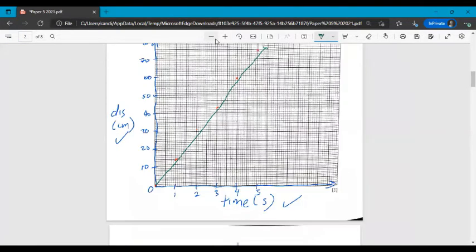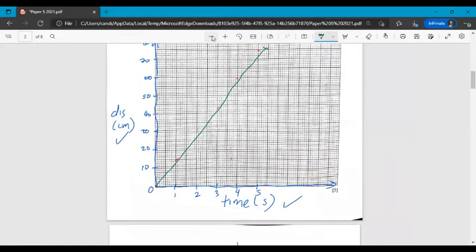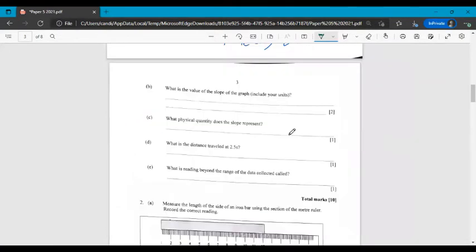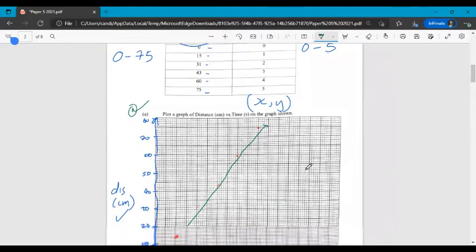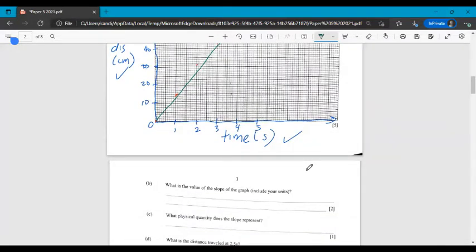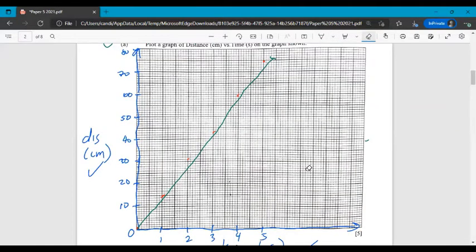But the main point is that you're going to get a linear graph. You're going to get a straight line graph. All right. Then the next thing you're asked to do. So this was our first question. A lot of graphs. Second question. We're asked what is the value of the slope on the graph and to include our units.